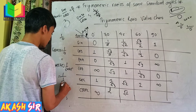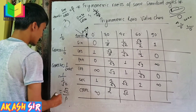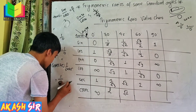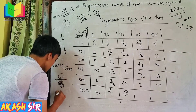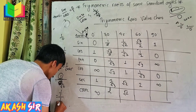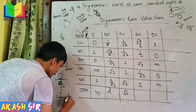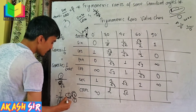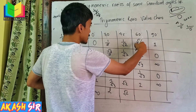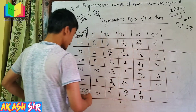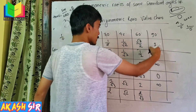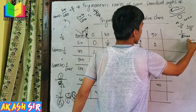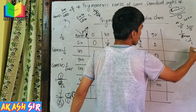Now looking at the cosec reciprocal: 1 by sin 45 is 1 by root 2, simply root 2. Cosec 60 is 2 by root 3. Cosec 90 is equal to 1 by sin 90, which is 1 by 1, equals 1.